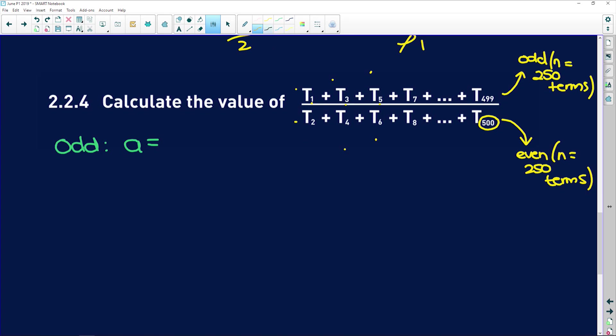So term 1 here is 36. Term 2 was negative 18. Term 3 is 9. Term 4 would be 9 divided by negative 2, which is negative 9 over 2. Term 5, if we keep with the pattern, is 9 over 4. And term 6 is negative 9 over 8. So you see that they form their own patterns. These are the odd ones, and these are the even ones.